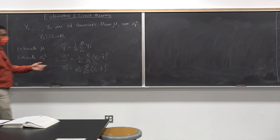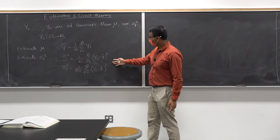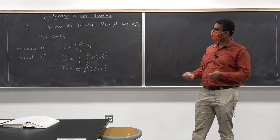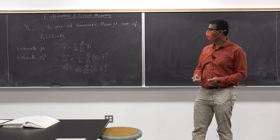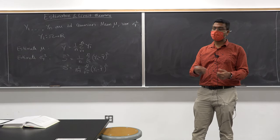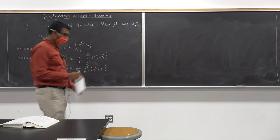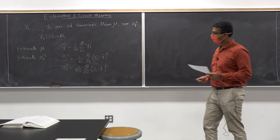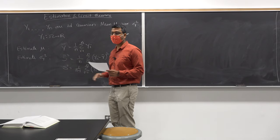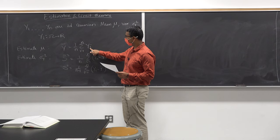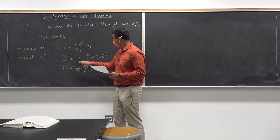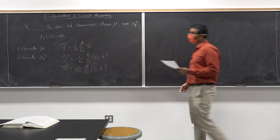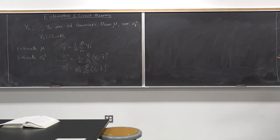A few questions arise: Is this a good estimate? If it is, how do we know? If it is not, how can we change the estimator to assure ourselves it is good? Before we determine whether the estimator is good or bad, let's understand what the distribution of these random variables looks like. Remember, yi is a random variable, so ȳ is also a random variable. Similarly, s̃² and s² are both random variables. We want to understand the mean and covariance of these random variables.